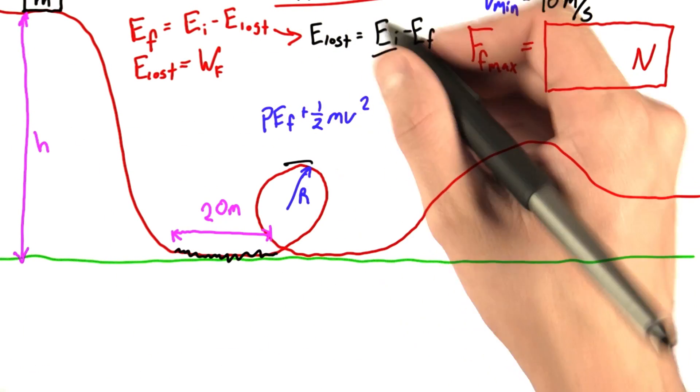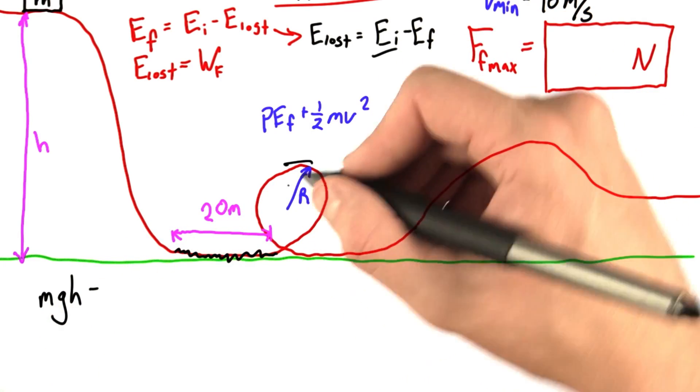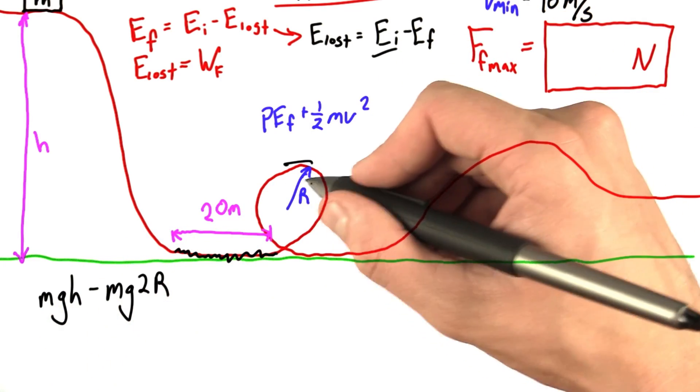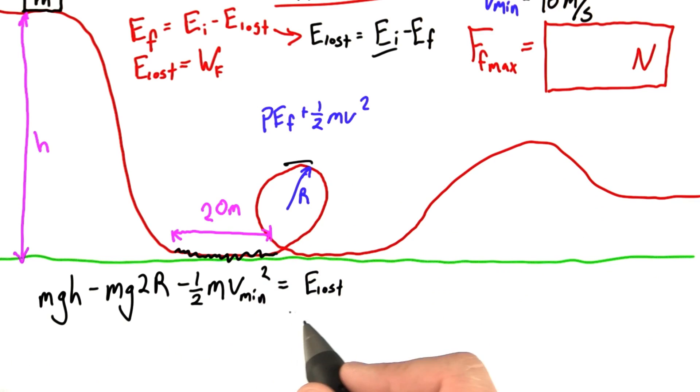Well, the initial energy, that's just the potential energy. The final energy is our final potential energy. And remember, this is now a height of 2R. So this is an expression for my energy lost.